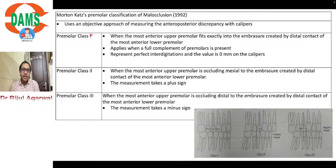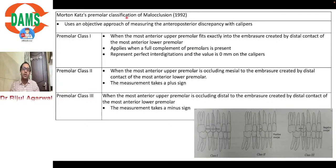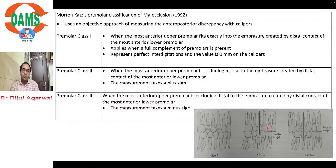Another related point: this classification was given in 1992 by Martin Katz. If the measurement is given with a plus sign, it is Class 2 malocclusion. If given with a minus sign, it indicates Class 3 classification.